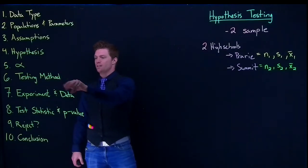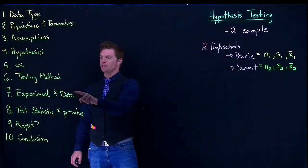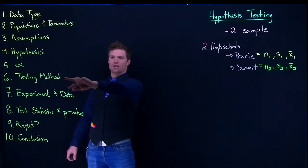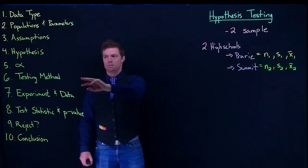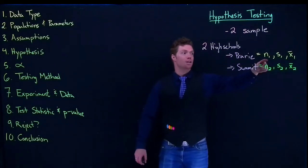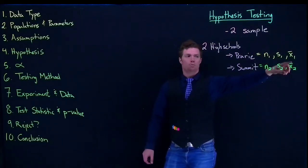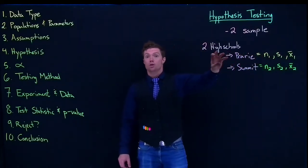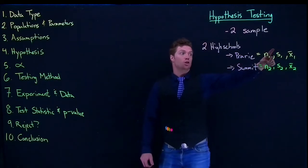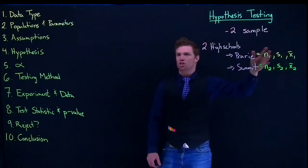After we've evaluated our testing method, we need to do our experiment and data. Now steps six and seven are actually tightly related because in order to figure out your testing method, you really need to have done the experiment and have numerical data to be able to determine if we have equal standard deviations or not.